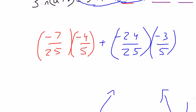And then we multiply. Negative 7 times negative 4 is 28. Negative 24 times negative 3, I can't do that in my head. It's 72. So plus 72 all over 125.